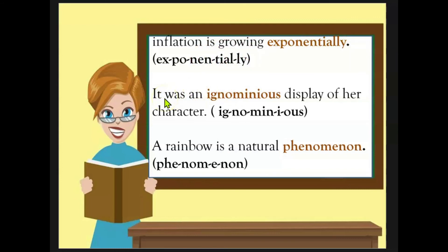The second sentence reads, It was an, and there is a word here. We're not quite sure what it is. It was an, something, display of her character. So let's attempt to break down this word part by part into small parts that we recognize and are able to call and then knit the parts back together. It was an ignominious, ignominious. It was an ignominious display of her character.